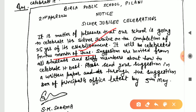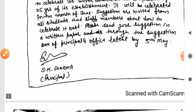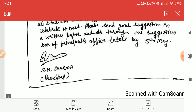It will be celebrated in June, though the exact date is not clear yet. Suggestions are invited from all students and staff members about how to celebrate it best. Please send your suggestion on a written paper through the suggestion box of the principal's office, latest by 5th May. Everyone should have a right to give suggestions. After that, add the signature, name, and designation of the principal in brackets.